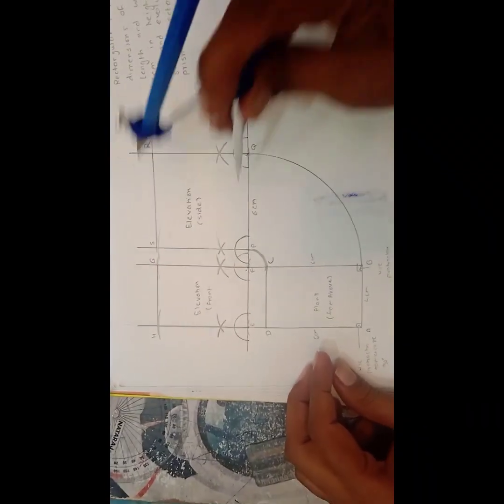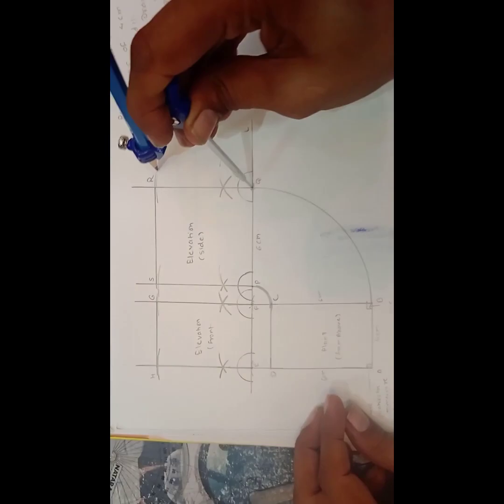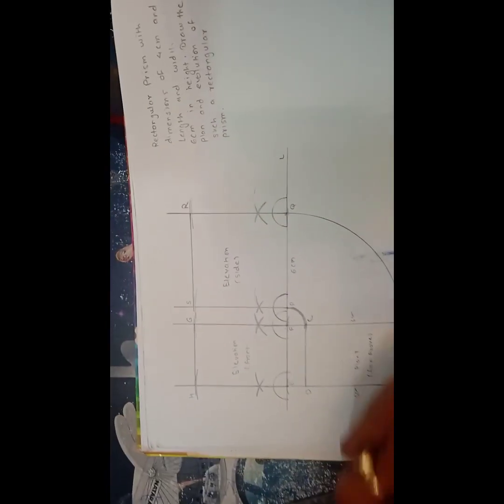Again from point F draw an arc. From point P draw an arc. And from point Q draw another arc.